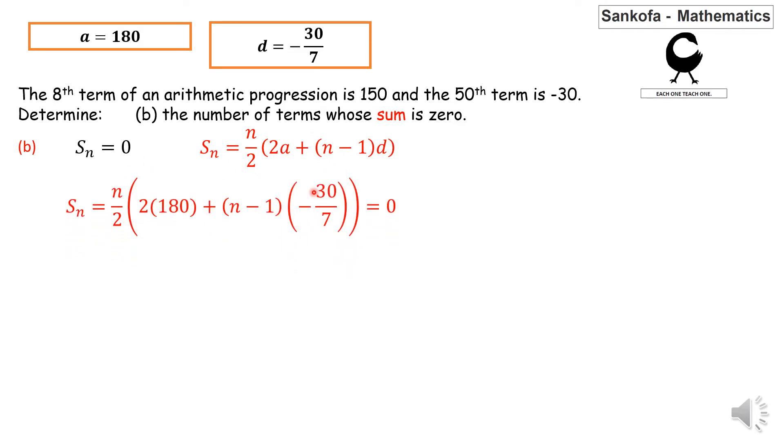If I substitute it into my formula, when you clean this up a little bit, you'll get n over 2 times the bracket. This gives you 360 plus 30 over 7 minus 30 over 7 times n. Cleaning it further, 360 plus 30 over 7 gives you 2550 over 7.